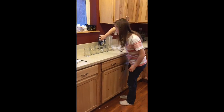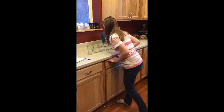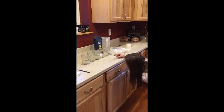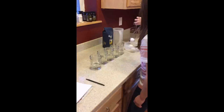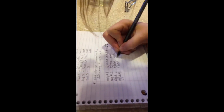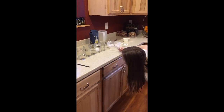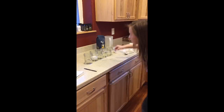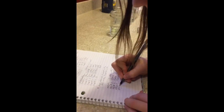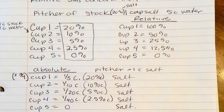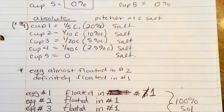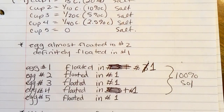I kept careful notes about how much salt was in each jar and whether each egg floated or not. They floated between 50 and 75 percent dilution of our stock. Then I created a second serial dilution of the 75 percent jar that floated the eggs. I learned that the eggs needed 56.3 percent of my original stock solution to float.